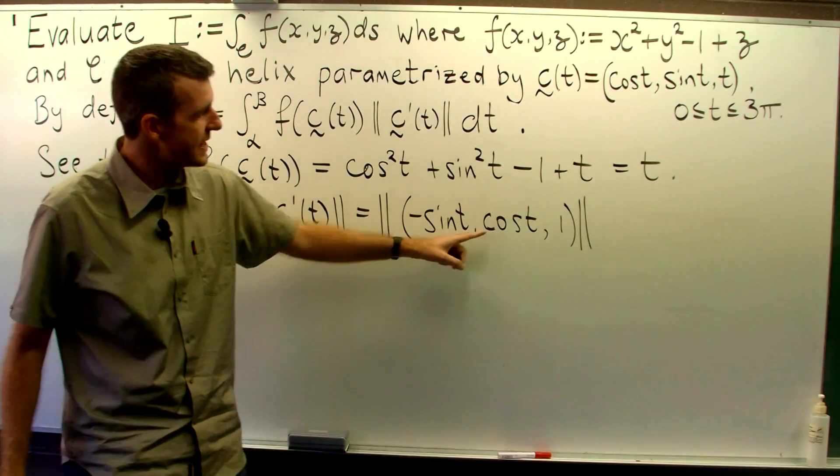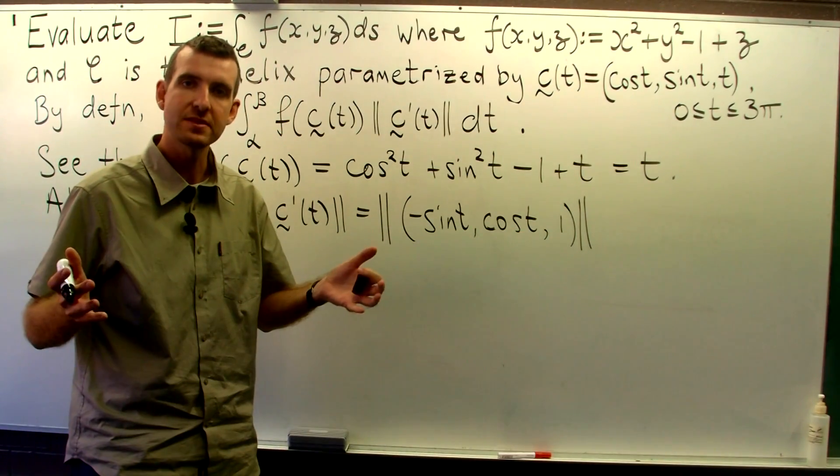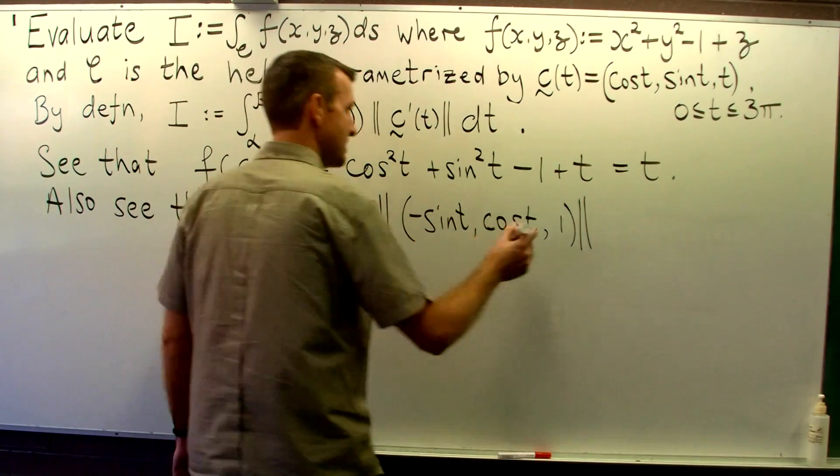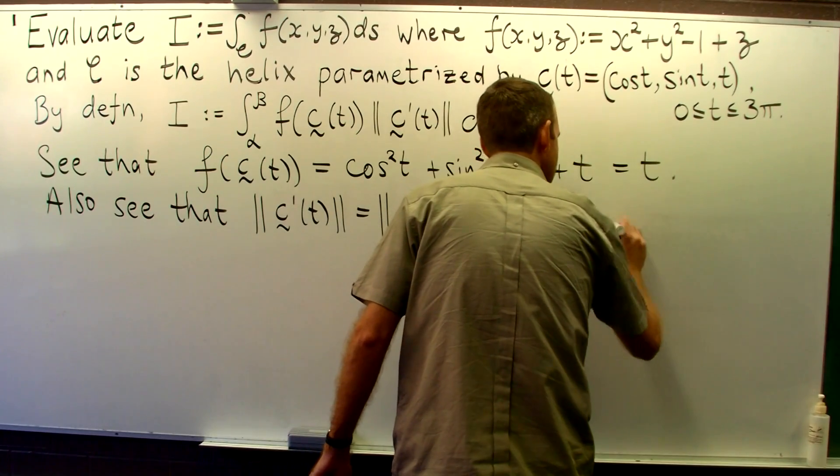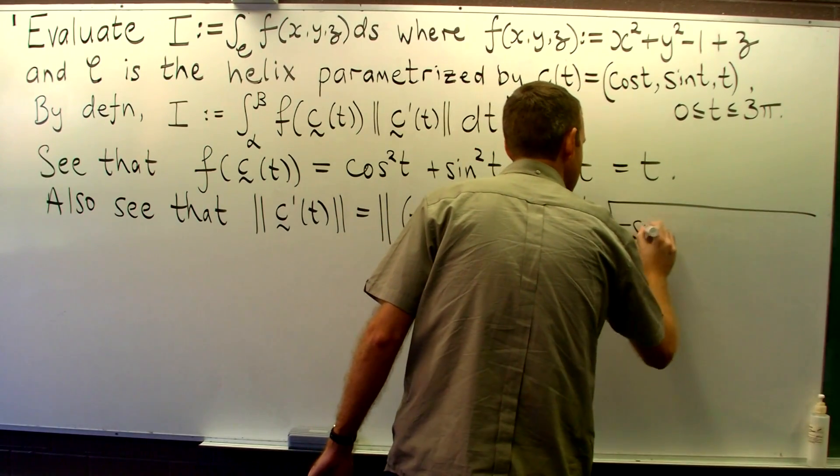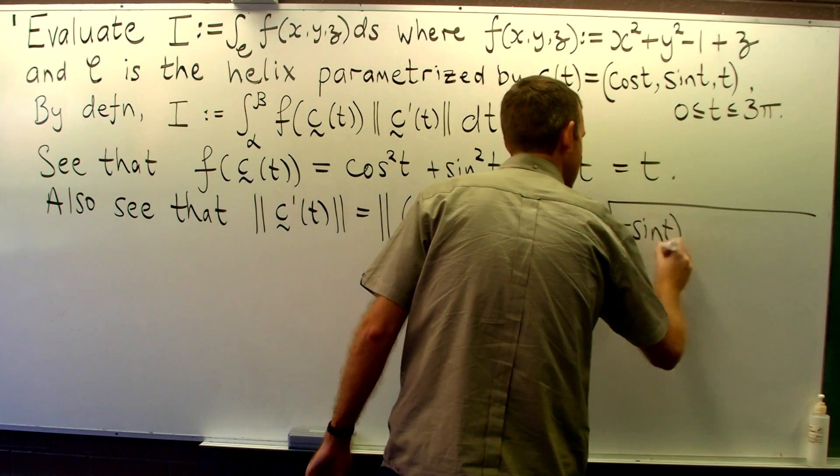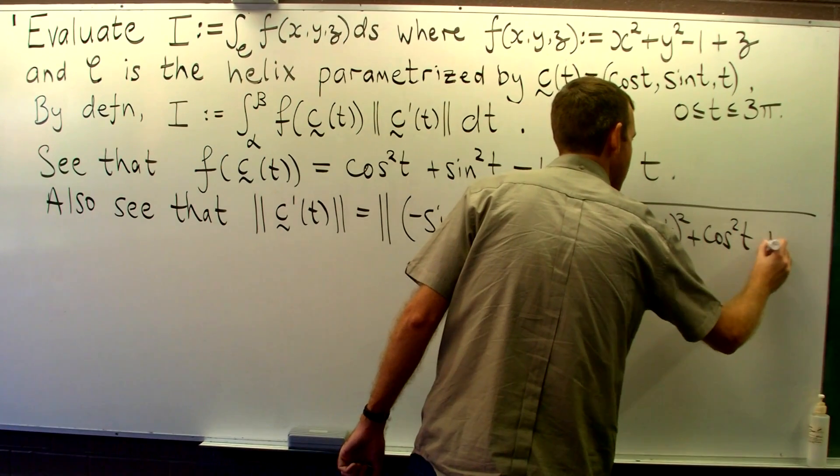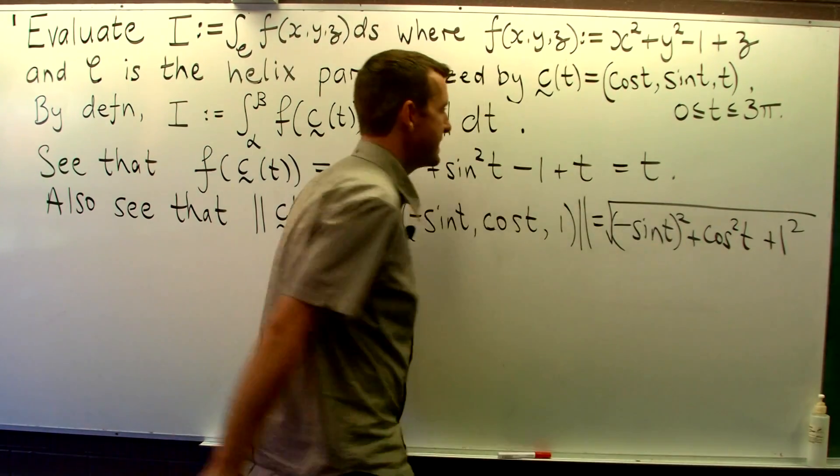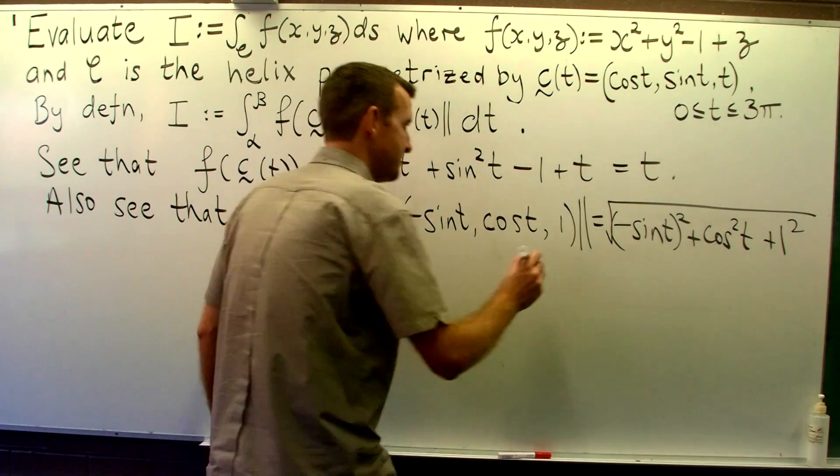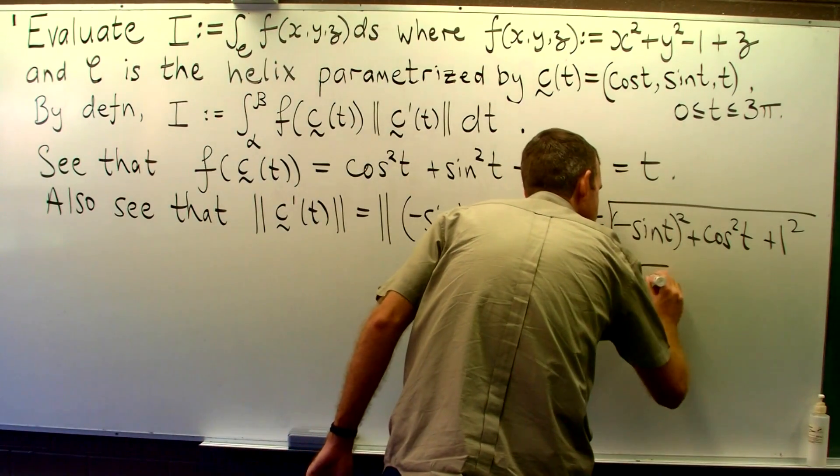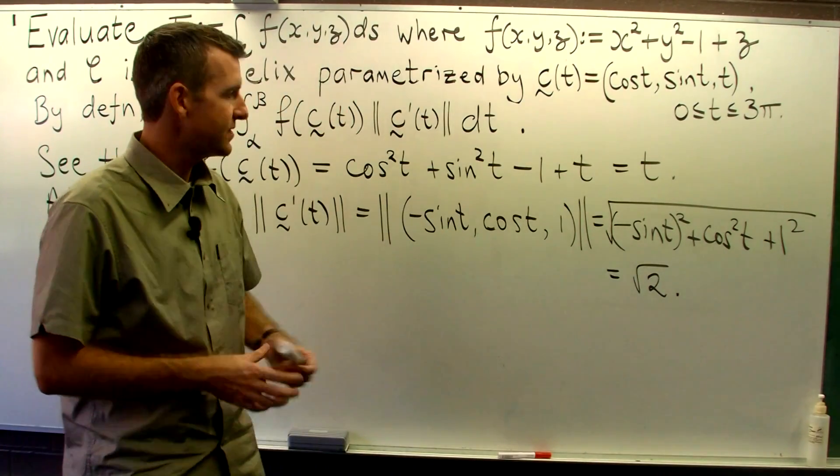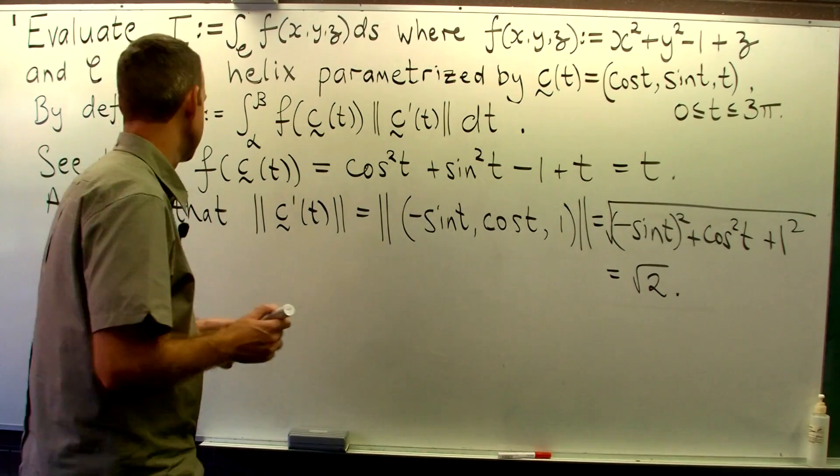So now what we do is we square each component, add all the components together and take the square root. So now again you'll see that there's some nice simplification here. We end up with root 2. Now notice there's a constant. In general, this is a function of t, not just a constant here.